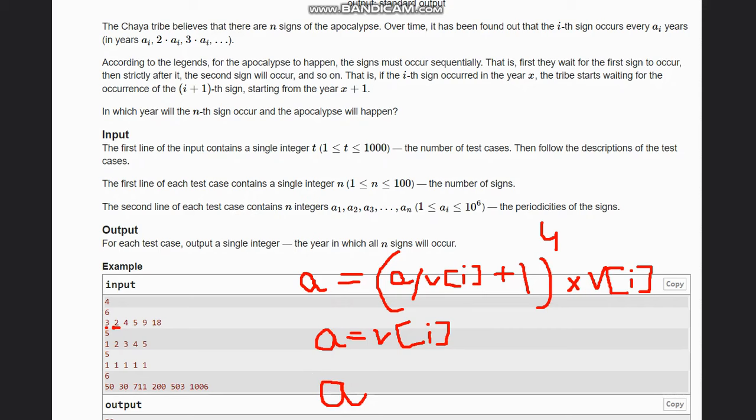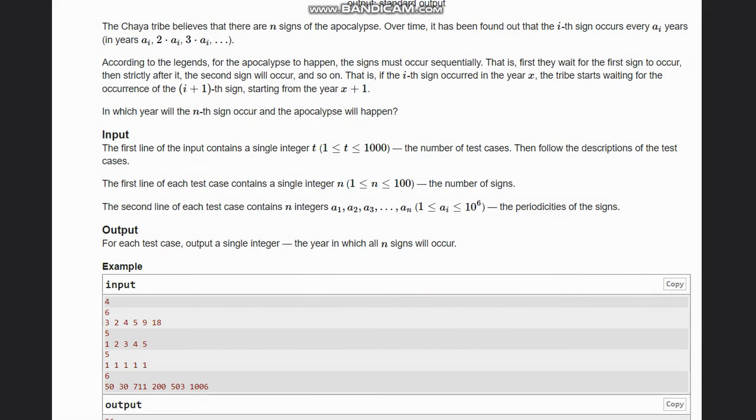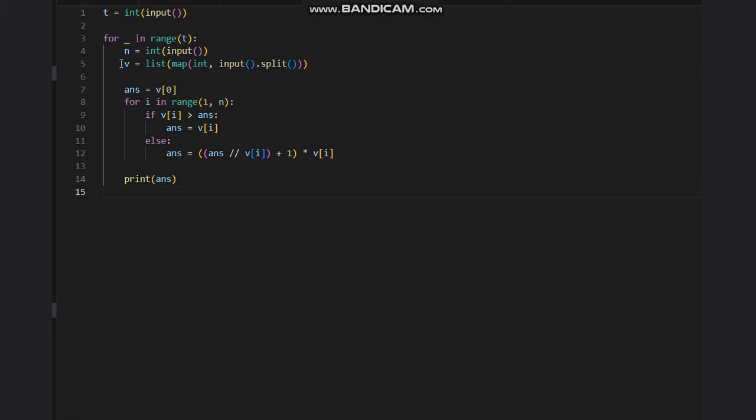Now let's look at the code for this. So here is the code for the same. First we take n, which is our input, and v, the list input. Then we assign answer as v[0], which I was taking as a, it is now declared as answer here. So for i in range 1 to n, if our v[i] is greater than answer, you put answer equal to v[i]. Else, answer will be (answer / v[i] + 1) * v[i]. And we will print our answer at last.